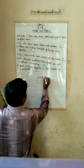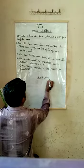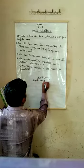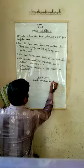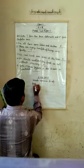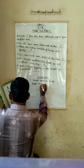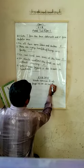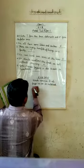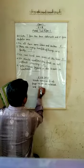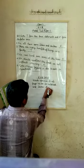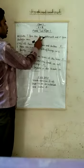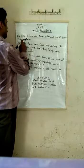Now write exercise D of page number 44 in your notebook and learn it. Exercise D: Write T for the true statements and F for the false ones.